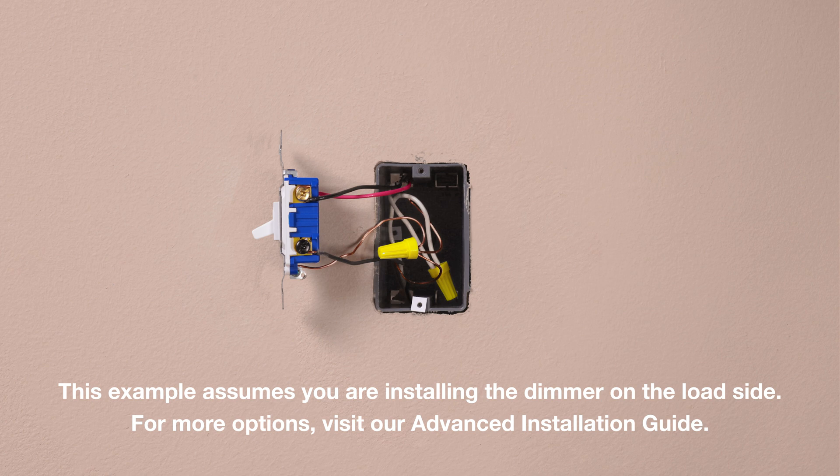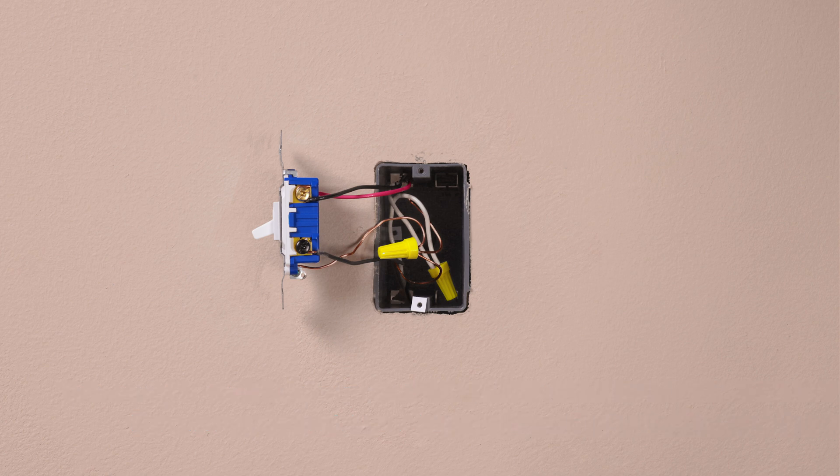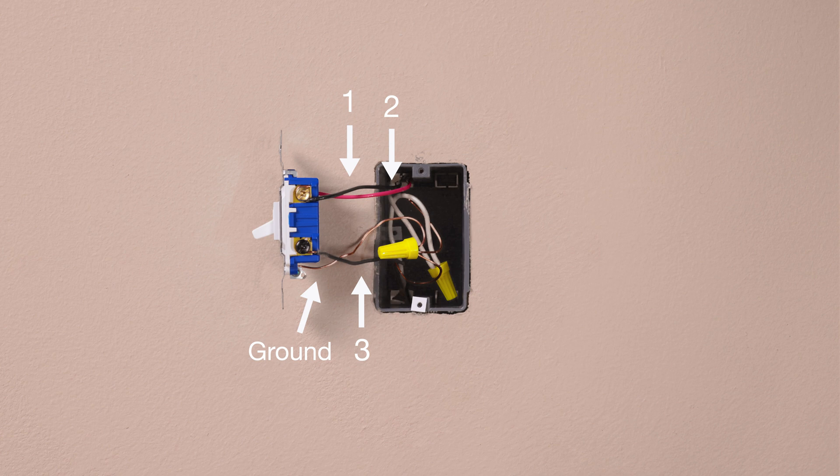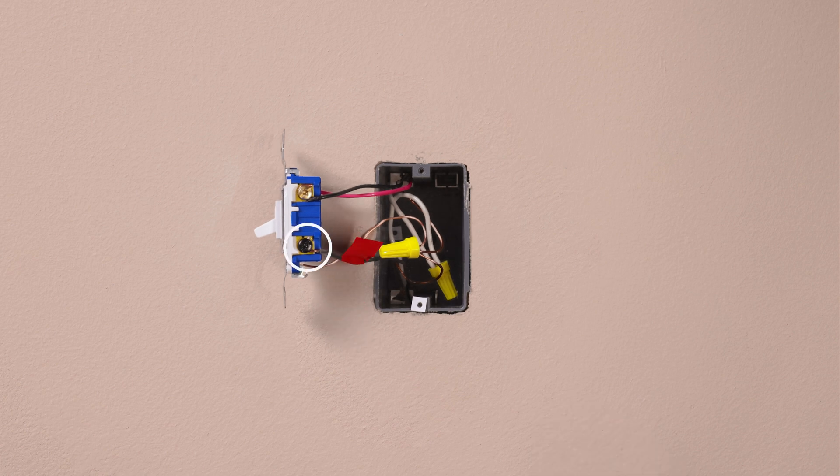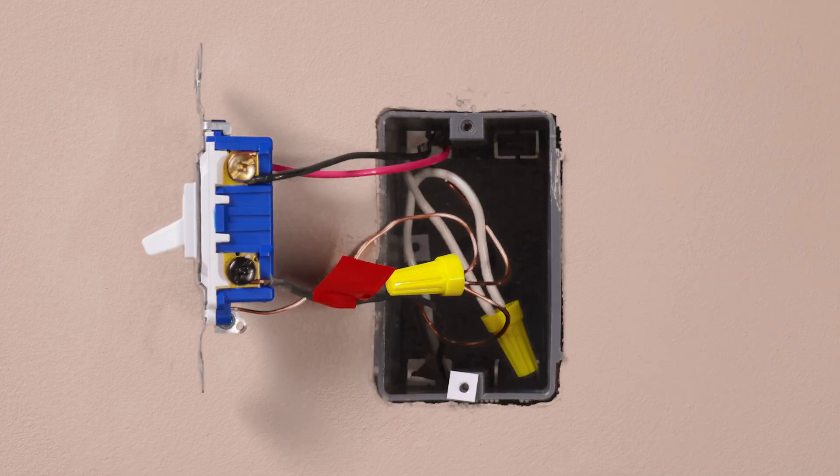If you have two switches that control this light, you should have three wires plus a ground connected to your old switch. Take a piece of electrical tape and tag the wire connected to the different colored screw of the existing switch. This is typically a black wire. Then remove your existing switch.